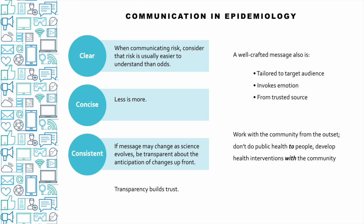It's important in both academic writing and public health communications to be as concise as possible while still conveying your point. Challenge yourself to keep editing your work down until removing more words would cause it to stop making sense. Public health messaging should be consistent, and if you expect the science may evolve over time, be transparent with the public about that upfront so that if your message changes it won't come off as an error or dishonesty. A well-crafted message is also tailored to the target audience, invokes emotion, and should be delivered by a trusted source — and who a trusted source is differs for every community.